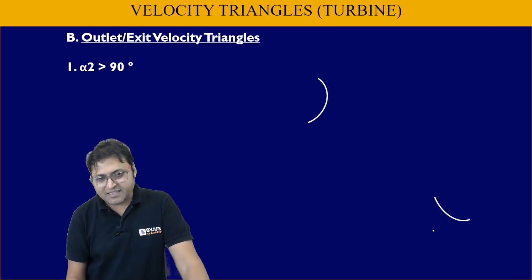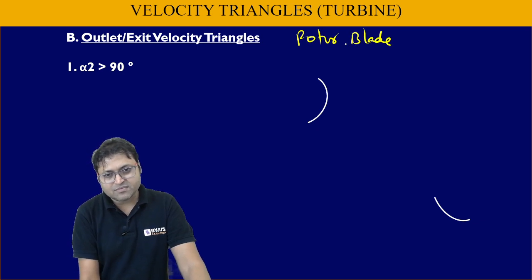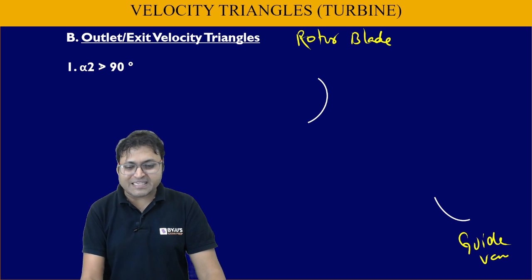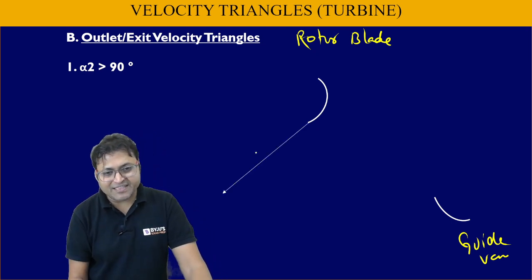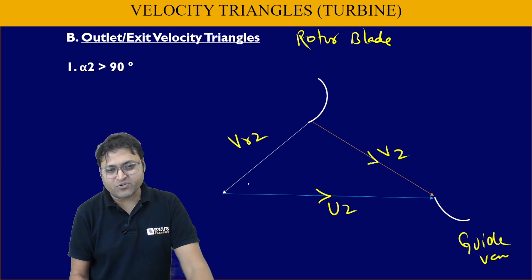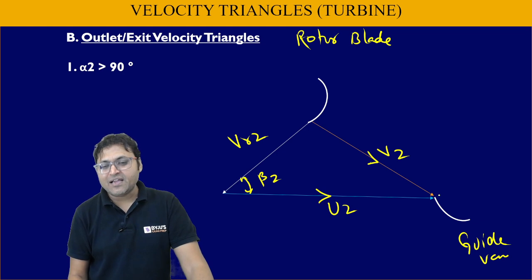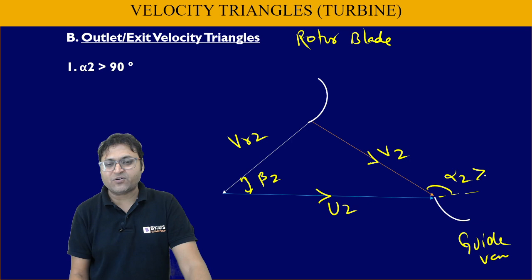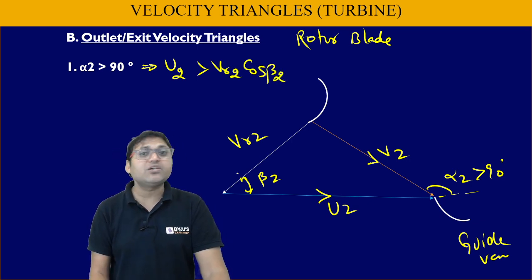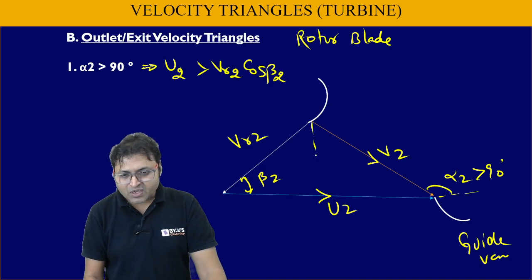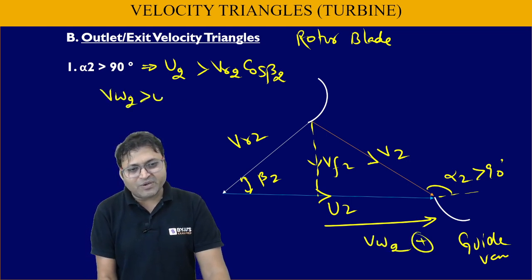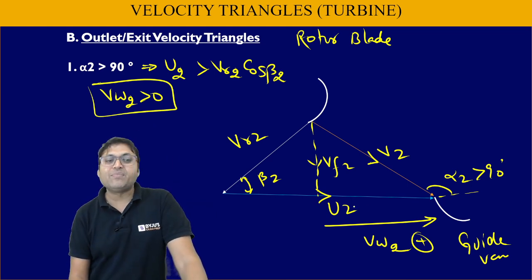Similarly, there will be three outlet triangles. The exit velocity triangle depends on α2. When α2 is greater than 90 degrees: β2 is fixed, U2 is horizontal, and the resultant is V2. The angle inside the triangle is β2 (fixed) and α2 is outside (variable). When α2 > 90°, U2 will be greater than Vr2·cos β2. Resolving V2 into components gives Vf2 and Vw2, which is positive because Vw2 is in the same direction as blade motion.